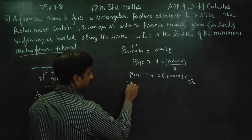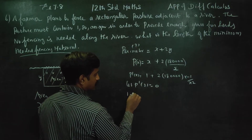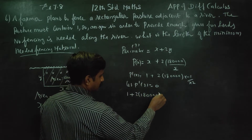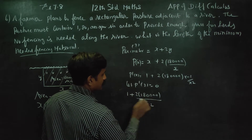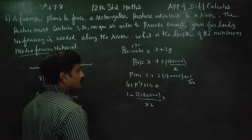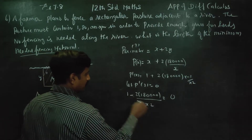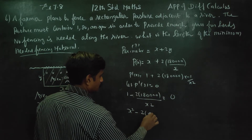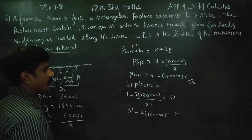Let us find the critical number. After first differentiation, let P dash x equal to 0. So 1 plus 2 into 1,80,000 by x squared, with minus sign, equals 0. Cross-multiplying, x squared minus 3,60,000 equals 0.